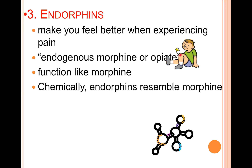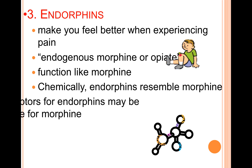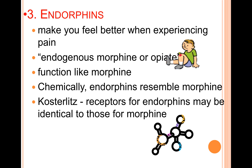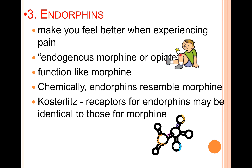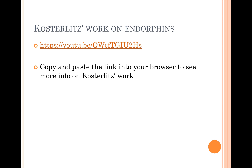Endorphins function like morphine and chemically resemble it. Researcher Hans Kosterlitz found that the receptors for endorphins are almost identical to those for morphine, which tells us two things: first, it explains why morphine is so effective in pain relief since it's chemically similar to our natural pain reliever; and second, it explains why morphine-like drugs are so highly addictive — we have ready-made receptor sites for these substances. If you want to learn more about Kosterlitz's work, you can copy and paste the link provided to get more information.